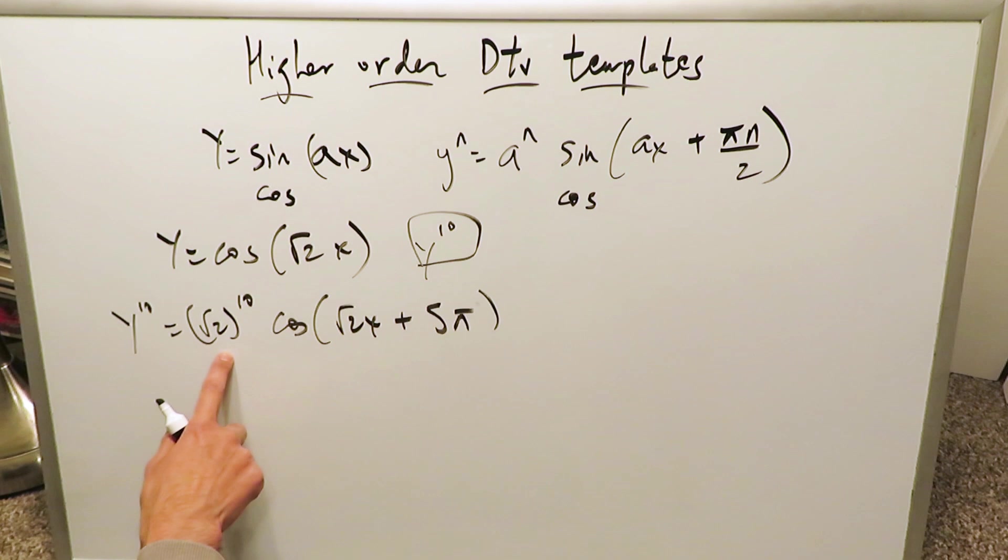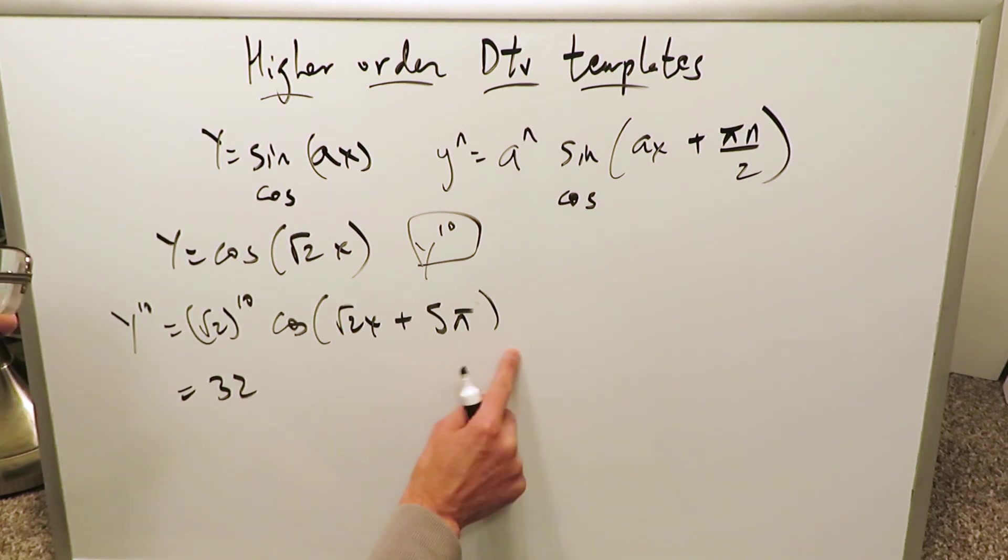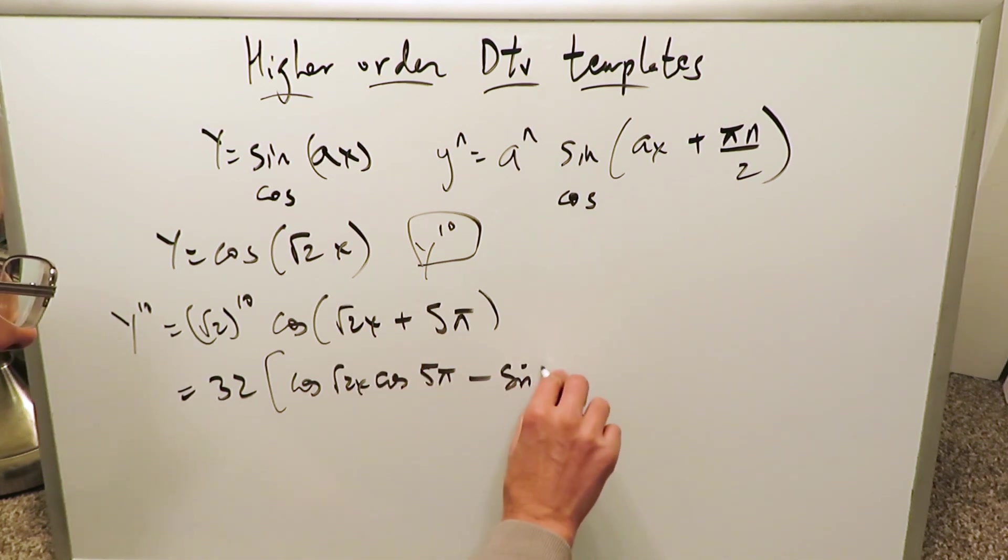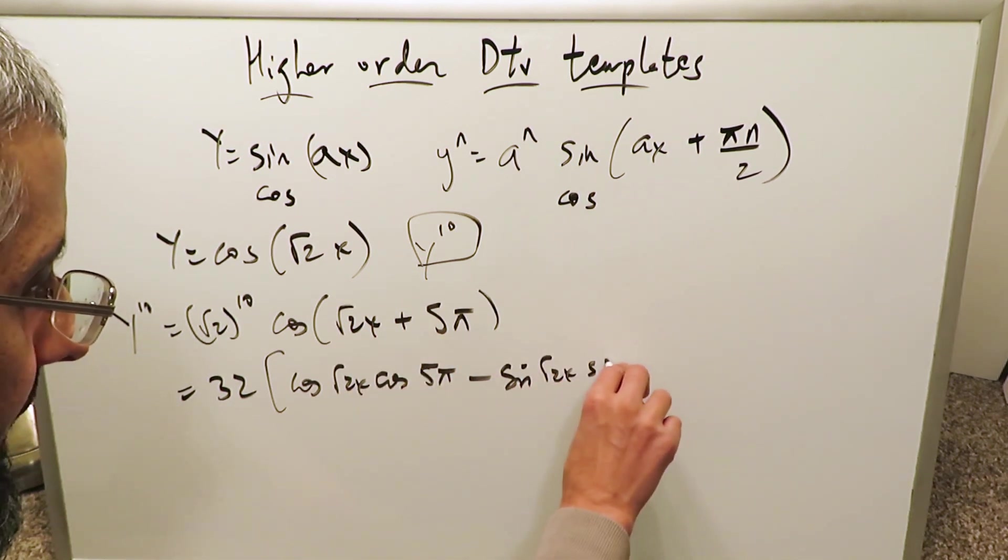√2 to the power of 10 you can easily determine, it's not too hard. Run that through your calculator, run it through your head. You'll get 32. Open this up using the cosine formula. You know it's going to be cosine √2x and then cosine 5π minus, you're using the cosine sum formula, sine √2x and then sine 5π.